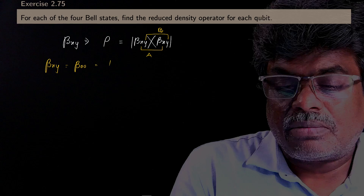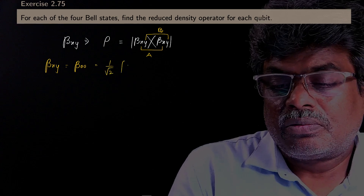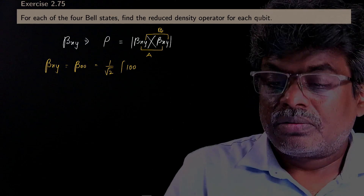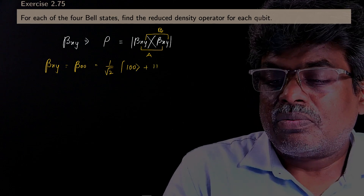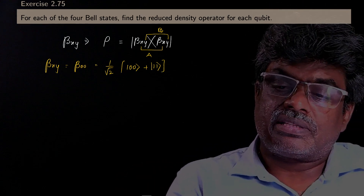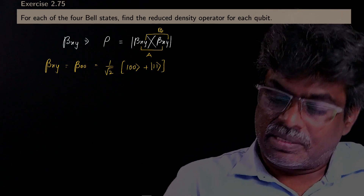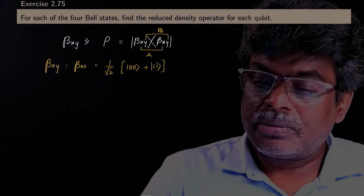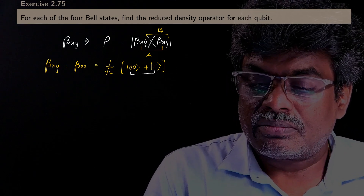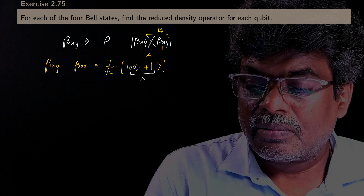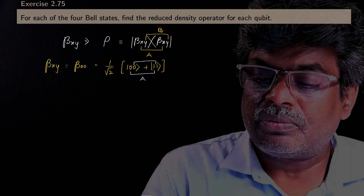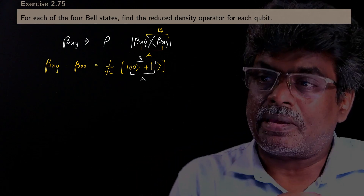β₀₀ is nothing but (1/√2)(|00⟩ + |11⟩). Please remember: this |0⟩ and |1⟩ stands for system A, and this |0⟩ and |1⟩ belongs to system B.